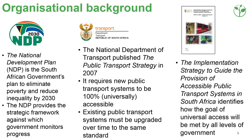The DOT measures progress against the National Development Plan. The public transport strategy requires 100% accessibility. New systems must be accessible, and existing public transport systems must be upgraded over time. The accessible public transport strategy won the Zero Project Award, and it explains how to implement universal access in public transport.